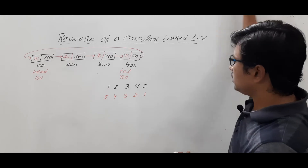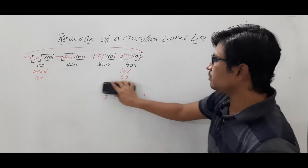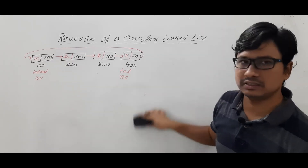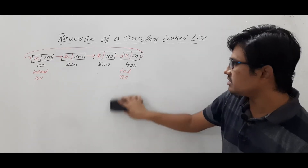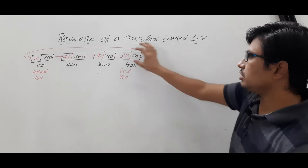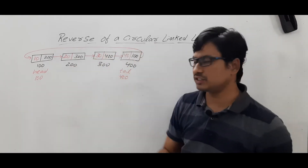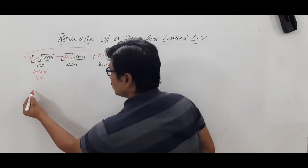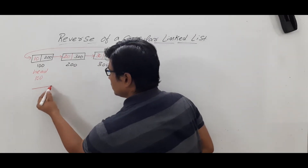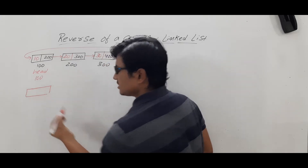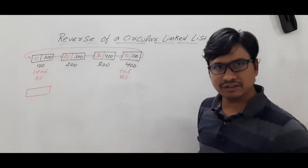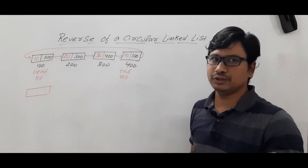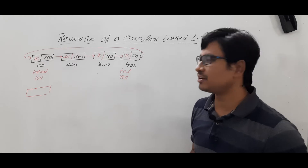Similarly, what is meant by reverse in a circular linked list? First, you have to make the last node the first node. The number of nodes will not change — if you reverse, will the number of nodes increase or decrease? No, you will have the same number of nodes.